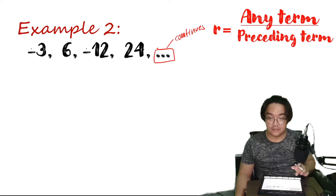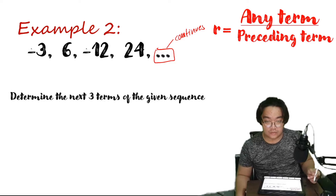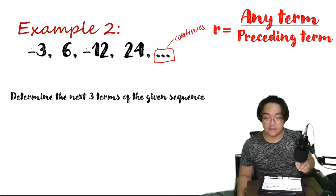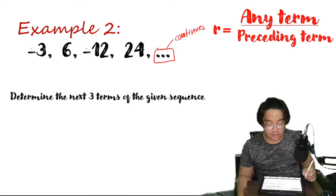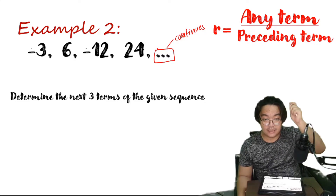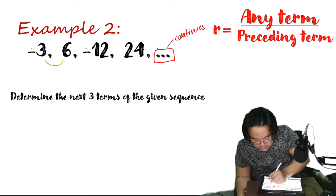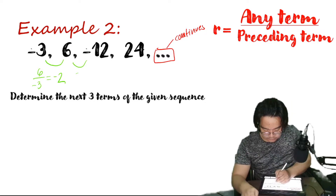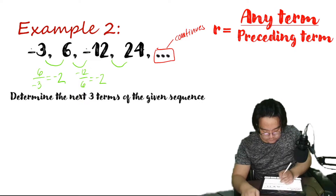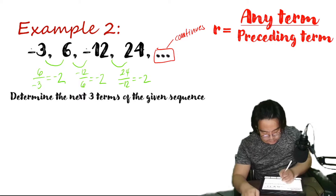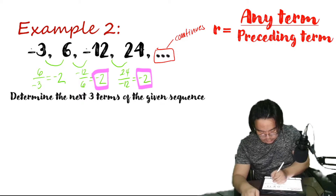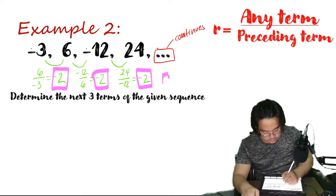So let's try this example. Given this sequence, let's determine the next 3 terms. For us to get the next 3 terms, we need the common ratio, and for that we divide any term by its preceding term. So if we divide 6 by negative 3, the result gives us negative 2. Negative 12 divided by 6 gives us negative 2. Positive 24 divided by negative 12 gives us negative 2. So our common ratio r is equal to negative 2.